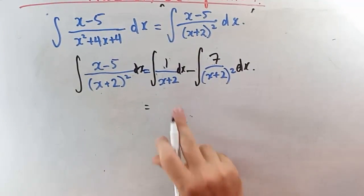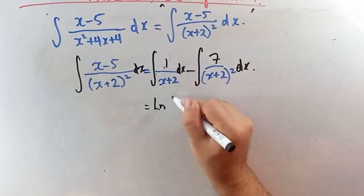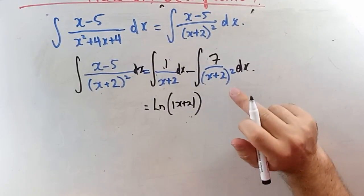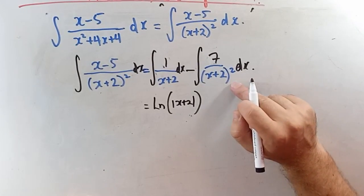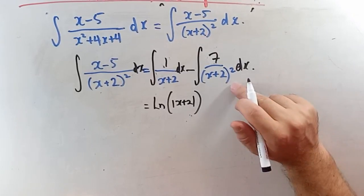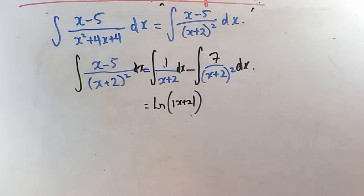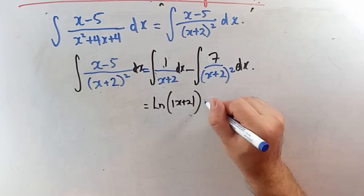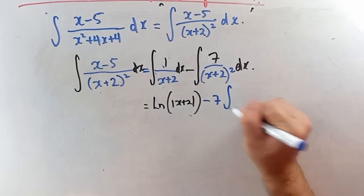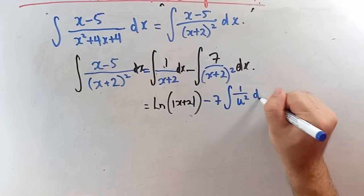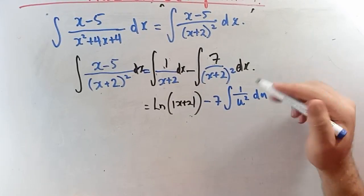With a equals 1 and b equals negative 7, we split the integral into the integral of 1 over x plus 2 dx minus 7 times the integral of 1 over (x plus 2) squared dx. The first is straightforward; the second needs a simple u-substitution with u equals x plus 2.